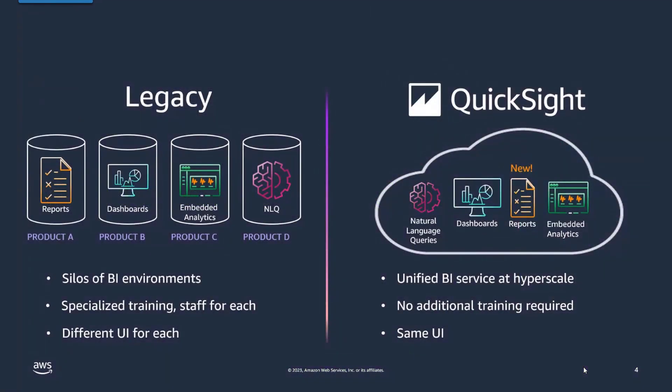So why Amazon QuickSight? With legacy systems, you have different products sitting in different silos: your reports sit in one product, your dashboards in another, your embedded analytics use a separate suite of products, and your NLQ and machine learning happen in yet another product. You end up with silos as part of your reporting requirements.